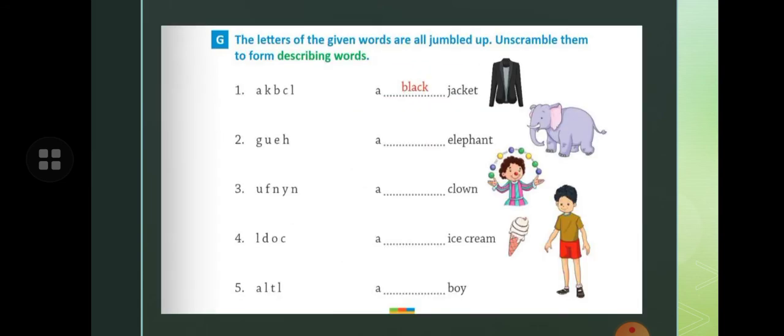Next is exercise G. The letters of the given words are all jumbled up. Unscramble them to form describing words. Like here jumbled letters are given. You have to write black jacket. Here elephant and the jumbled letter, you will write huge, H-U-G-E. Huge elephant.